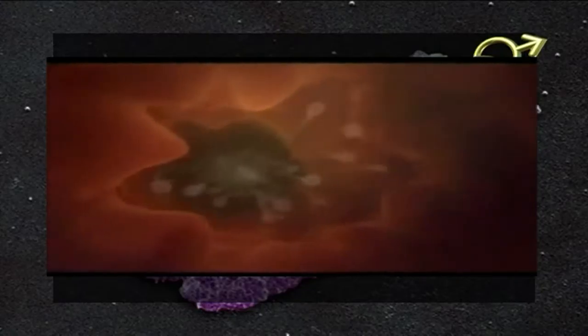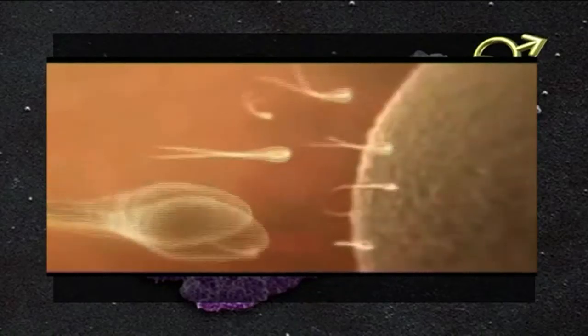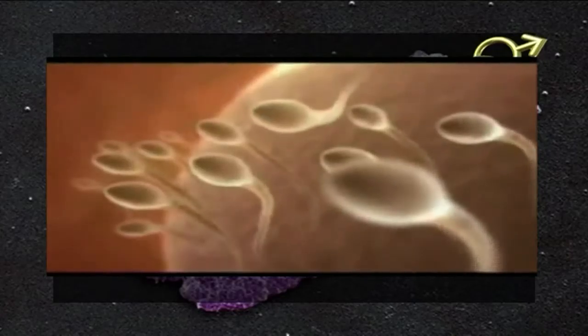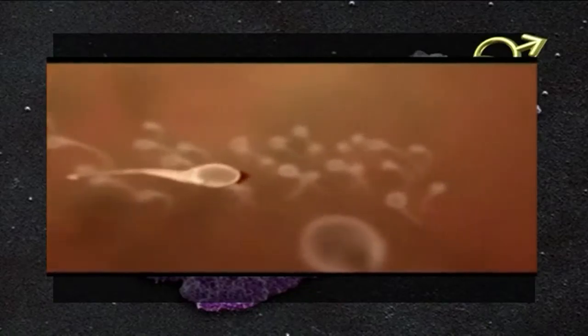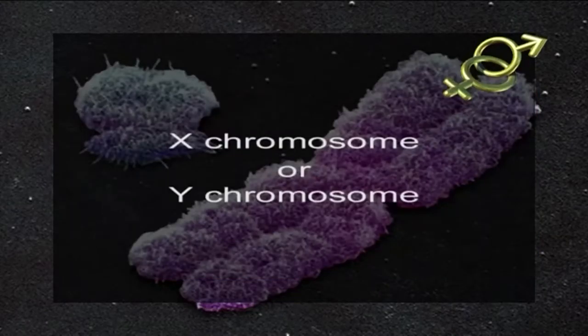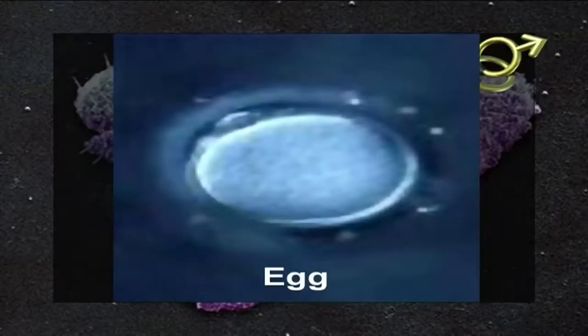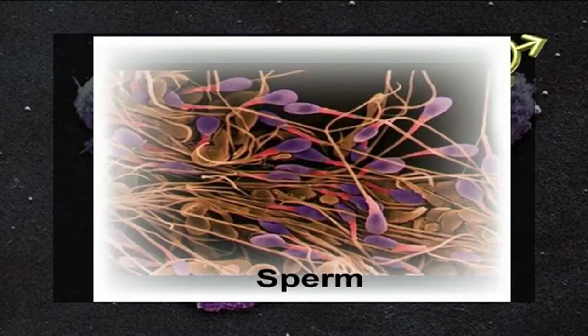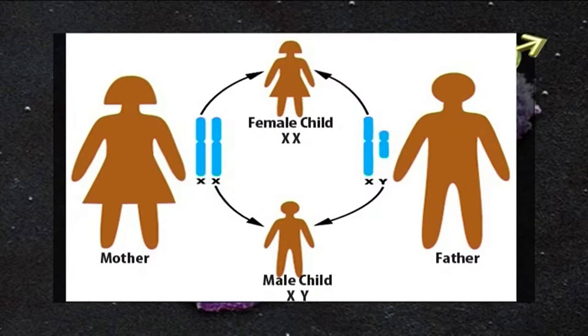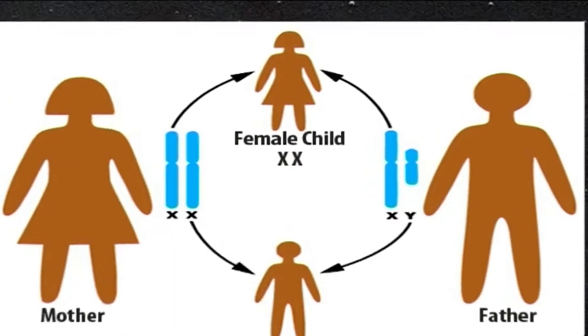The sex of an individual is determined at the time of fertilization when the male sperm joins with the female egg. Because all human female cells have two X chromosomes, when the egg forms by meiosis it must contain an X chromosome. However, since all human male cells have both an X and a Y chromosome, when the sperm forms by meiosis they can contain either an X chromosome or a Y chromosome. Thus during fertilization, the eggs always contribute an X chromosome and the sperm can contribute either an X or a Y chromosome.